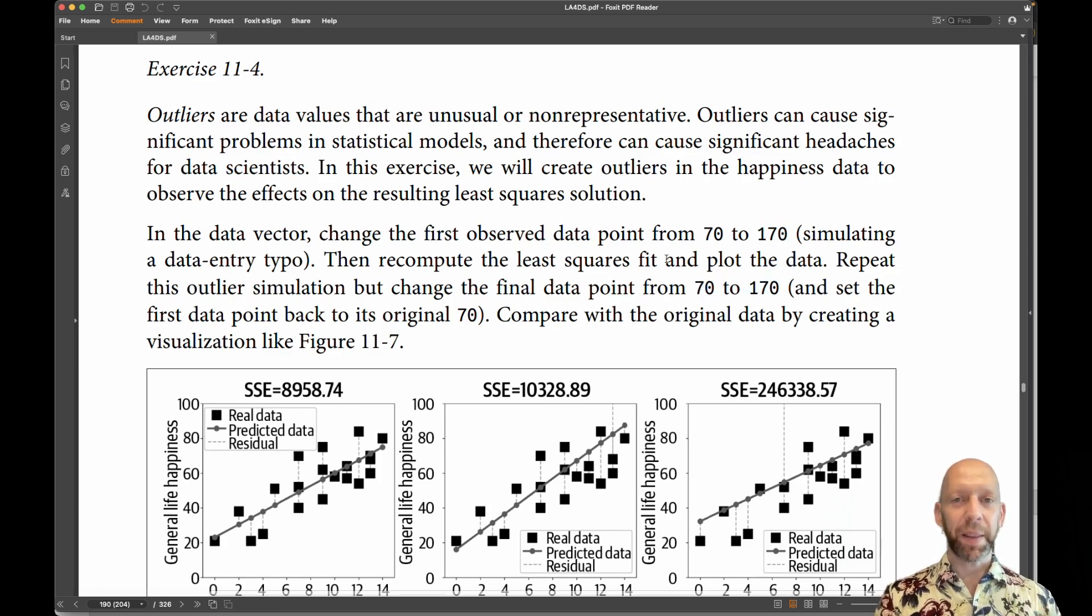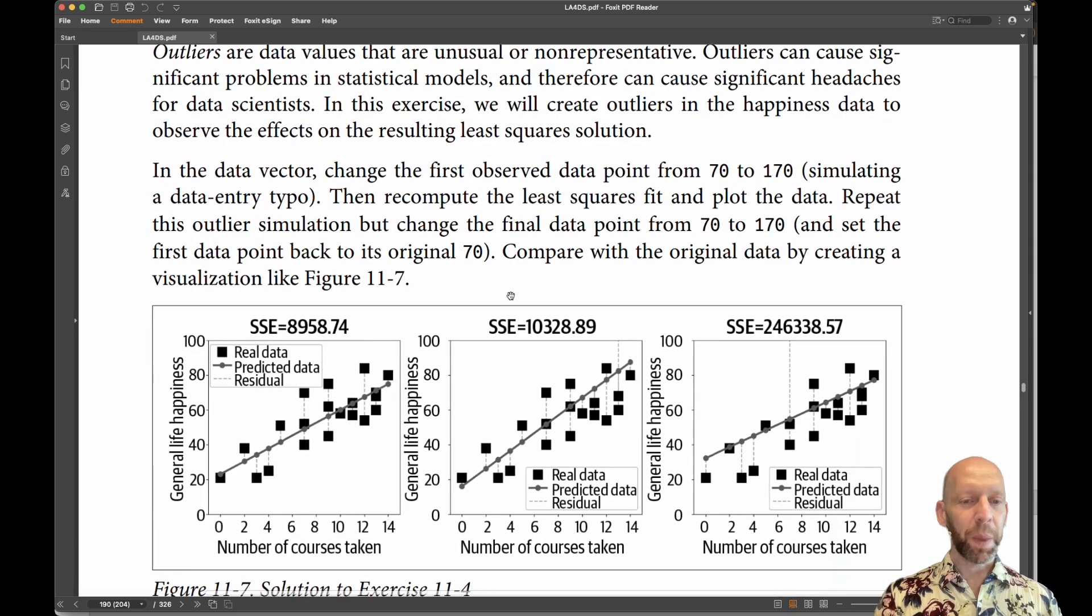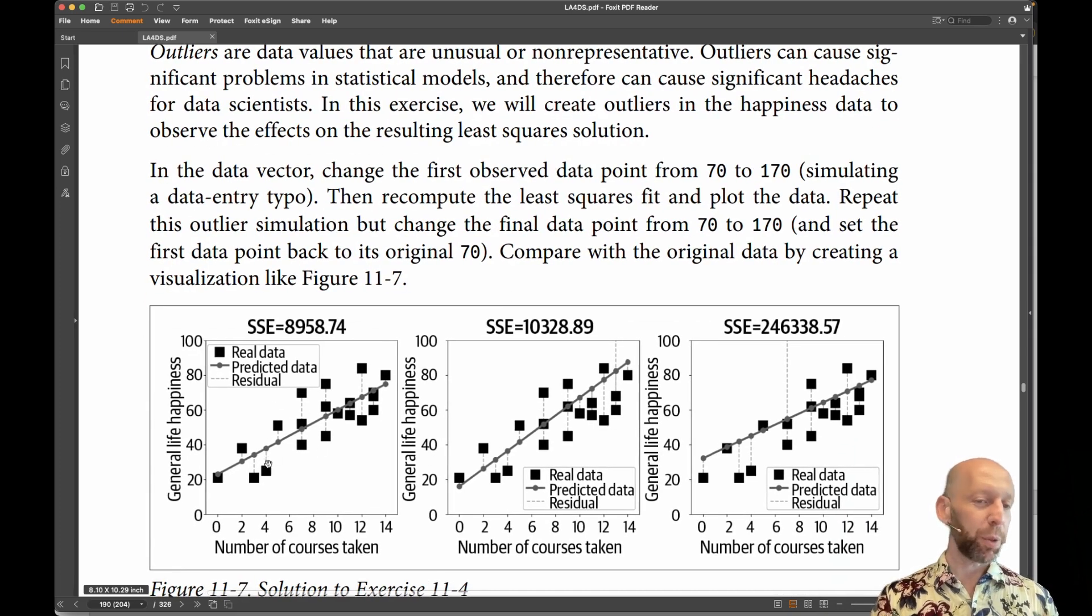In this data set, the first value is 70 and the last value is 70. And what you have to do in this exercise is to basically produce this plot. Here you see the real data in black, the predicted data in gray, and the residual lines in this gray dashed line.